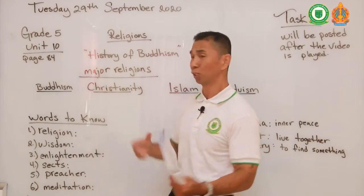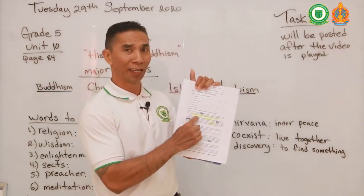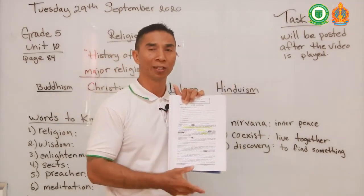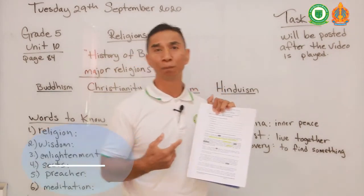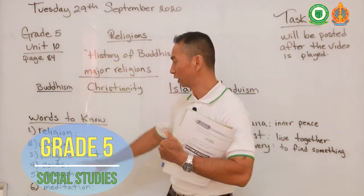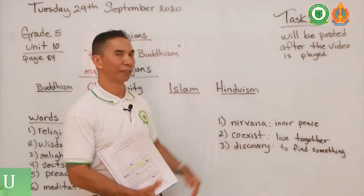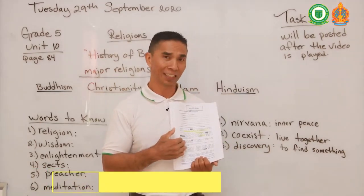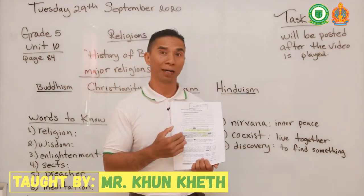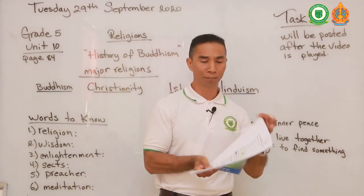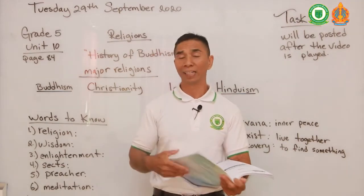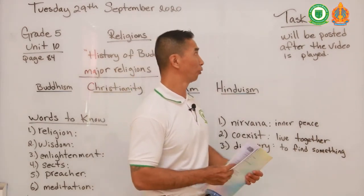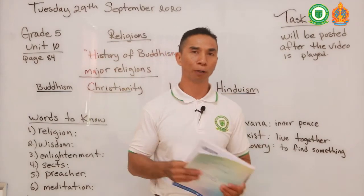My last word is 'discovery,' which means to find something. As we studied about the history of Buddha, we have learned that a man by the name of Gautama from India discovered Buddhism. He was a rich prince from a family in India. He went out to find inner peace, and on his journey he found enlightenment, wisdom, and nirvana, which in turn started Buddhism. Through our discussions you have understood that, and I've seen that you know a lot about the history of Buddhism.